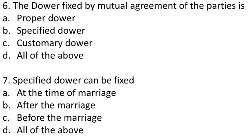Question 6: The dower fixed by mutual agreement of the parties is — (A) proper dower, (B) specified dower, (C) customary dower, (D) all of the above. The answer is B: specified dower.